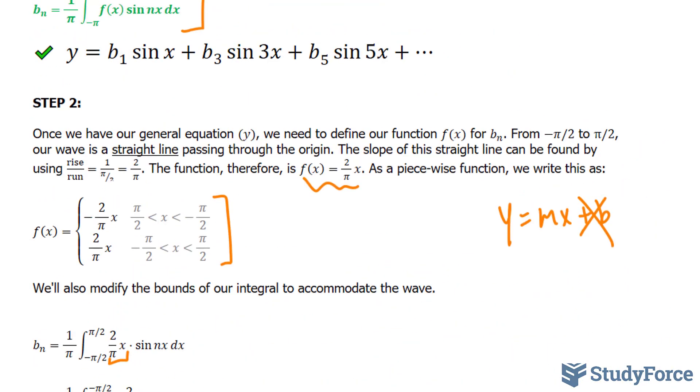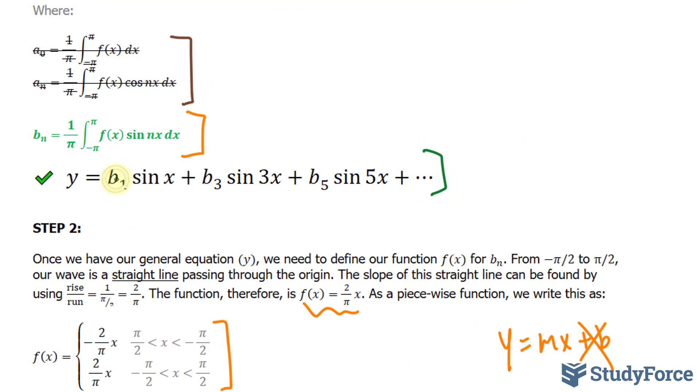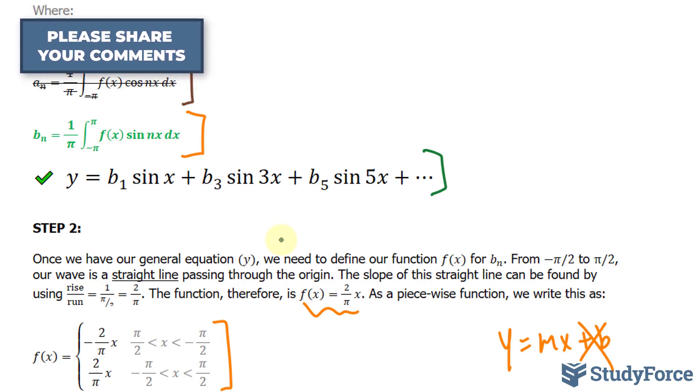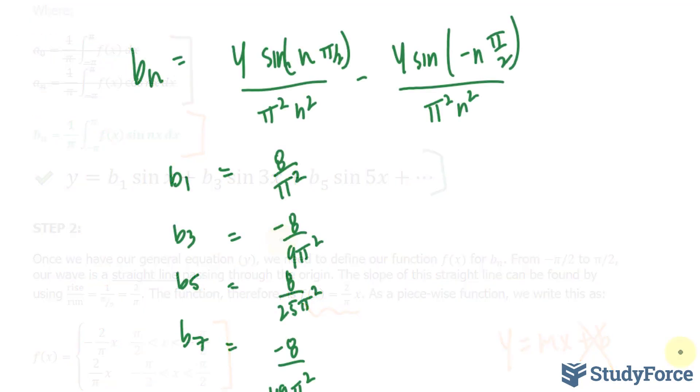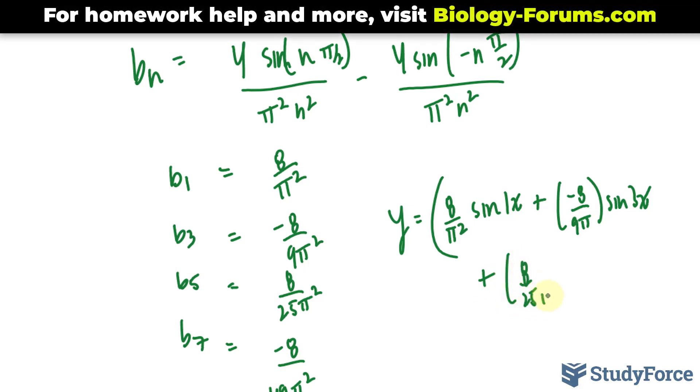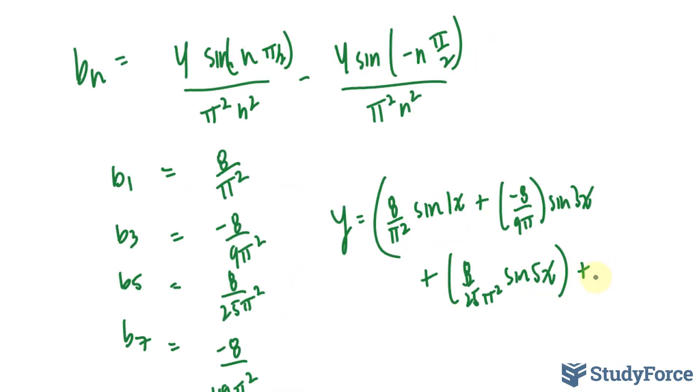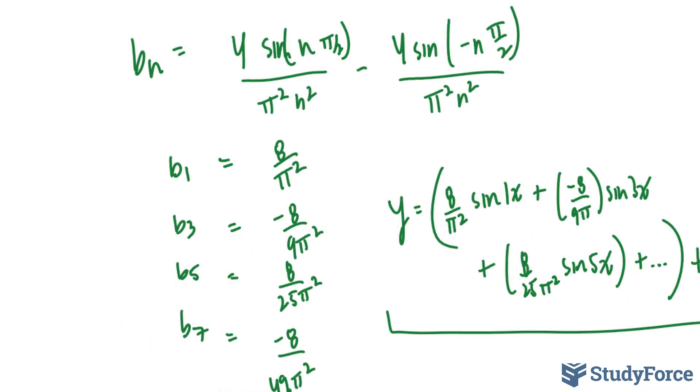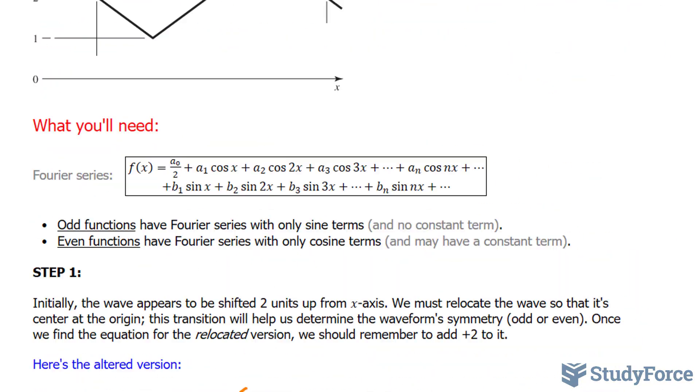Going back to our equation, we can now substitute what we just found. And don't forget that +2 because we had translated it downwards by 2 units at the very beginning. Our equation becomes y = 8/π²·sin(x) - 8/(9π²)·sin(3x) + 8/(25π²)·sin(5x) + ... + 2. This right here represents the Fourier series equation for the waveform we started with. And that is how to write a Fourier series to represent a wave.